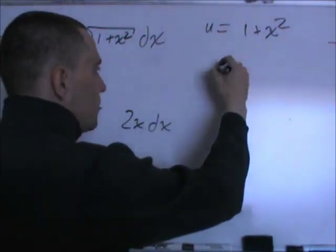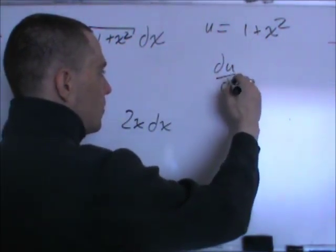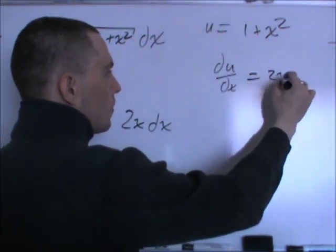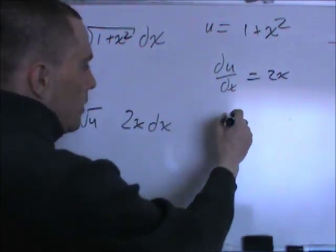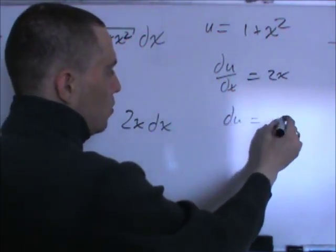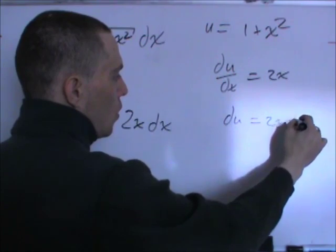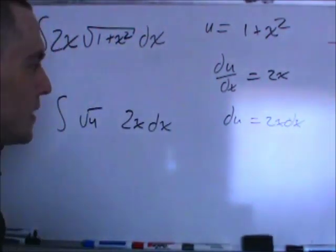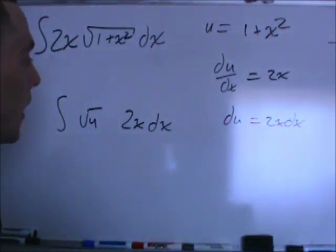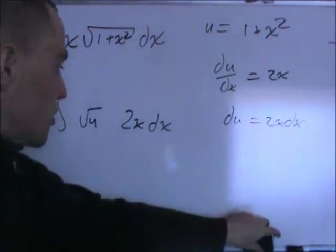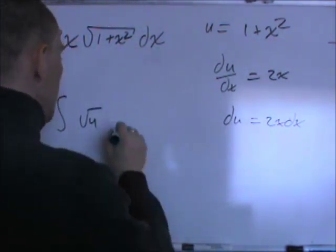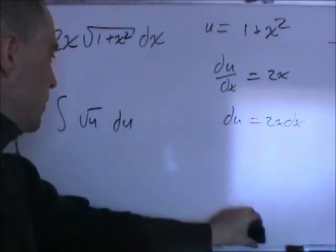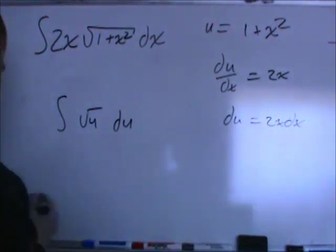Differentiate this, put dx on the other side, so that's du equals 2x dx, and now it's just a straightforward substitution. So, now we have integral of square root u du, straightforward integration.